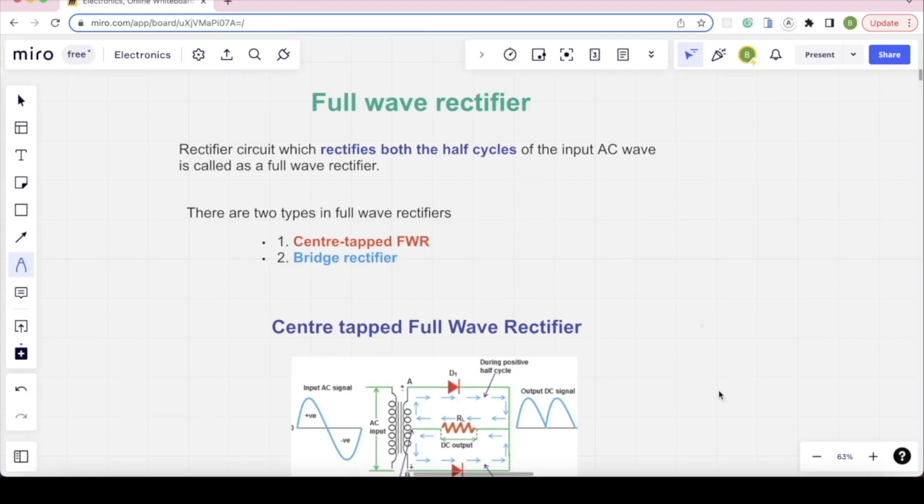Next to full-wave rectifier. Full-wave rectifier converts both the half-cycles, positive and negative, you can convert it. That's the full-wave rectifier. There are two types: Center tapped full-wave rectifier and bridge rectifier.